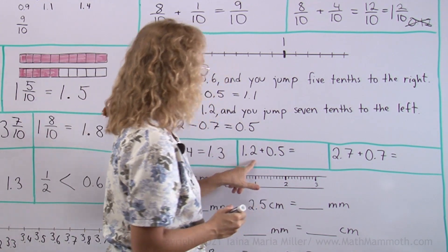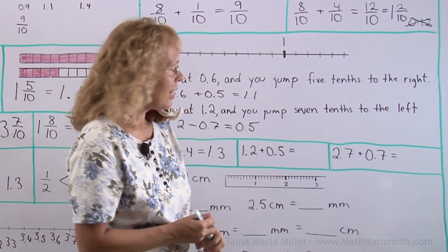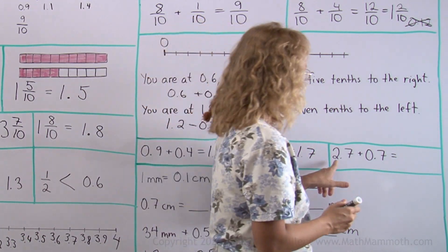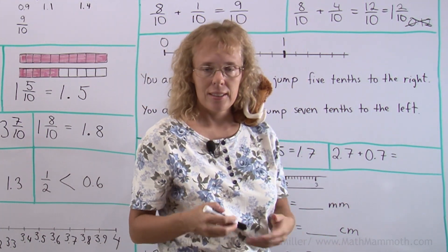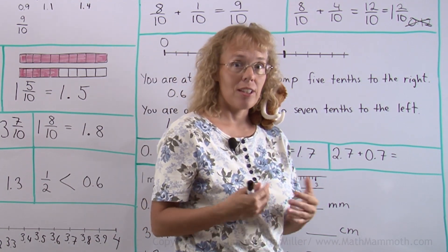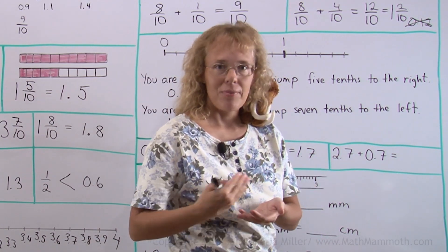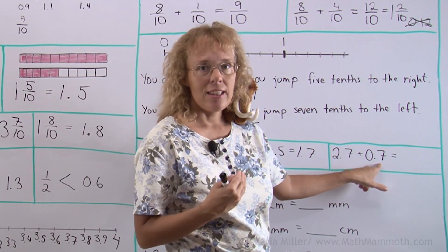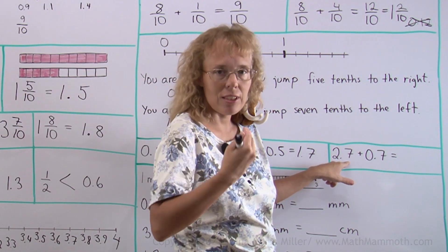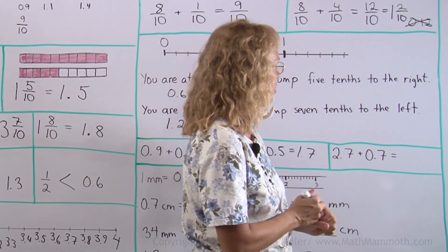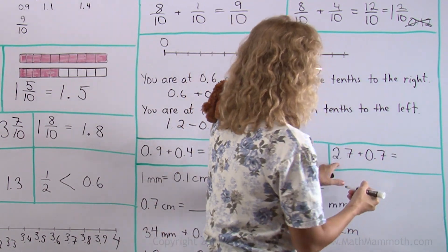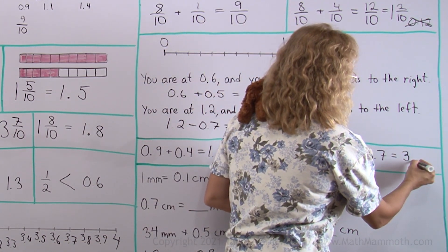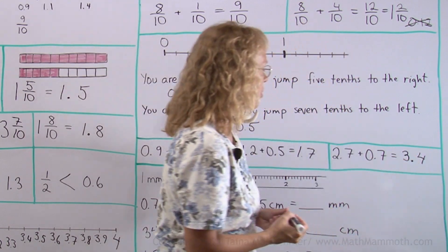Here's 1 and 2 tenths plus 5 tenths. That's very easy. It's going to be 1 and 7 tenths. 2 and 7 tenths plus 7 tenths more. Can you figure that one out? It's going to be more than 3 now. Because of these tenths that we have. 3 tenths would go to fill this one. So we get 3 as a whole number and then we will have 4 left over. This is now going to be more than 3. Can you tell?